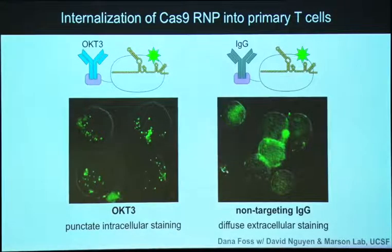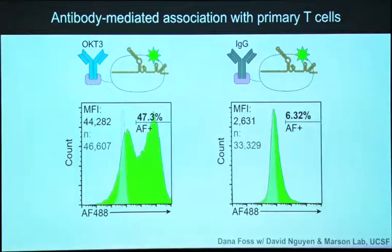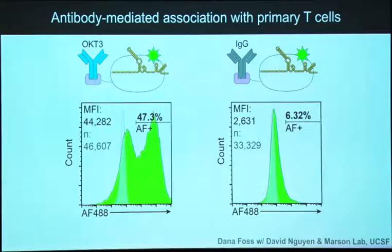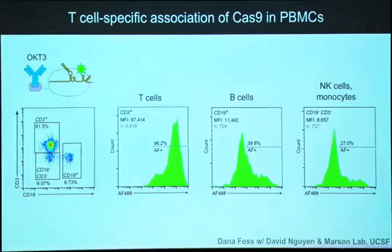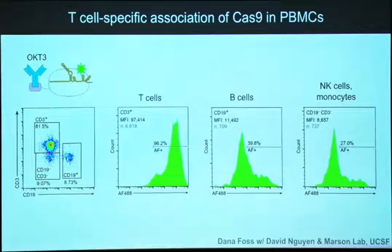In contrast, when we couple Cas9 to a generic array of IgG antibodies that shouldn't target anything, the only staining we see is diffuse extracellular staining. Quantifying these two populations at a 30-minute time point, we can see a good amount of Cas9 associated with T cells when the CD3-targeting antibody is there - I should mention this is an OKT3-based CD3 targeting antibody that's been used therapeutically and induces TCR internalization. The CD3-targeting antibody gets us lots of association with T cells, while the heterogeneous IgG population doesn't get us much. In a mixed population of PBMCs, the Cas9 was still targeted specifically into the T cells, with tons of staining in T cells and pretty low levels of background staining. In a blood-like context, this is pretty promising.